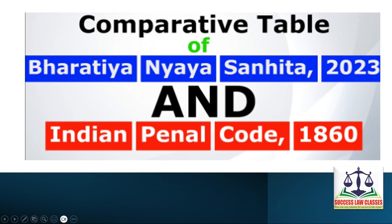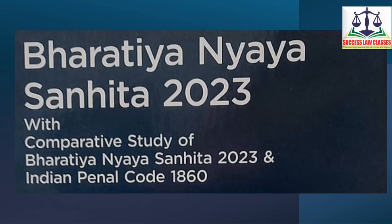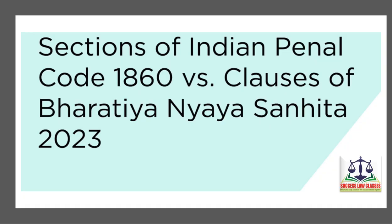Hi, hello everybody. This is Uma from Success Law Classes. Today we are going to discuss the Comparative Table of Bharatiya Nyaya Sanhita 2023 and Indian Penal Code 1860, Part 2. Bharatiya Nyaya Sanhita 2023 is going to be implemented from 1st July 2024 and it totally contains 358 sections divided into 20 chapters. Let us discuss the sections of Indian Penal Code versus the clauses of Bharatiya Nyaya Sanhita 2023.